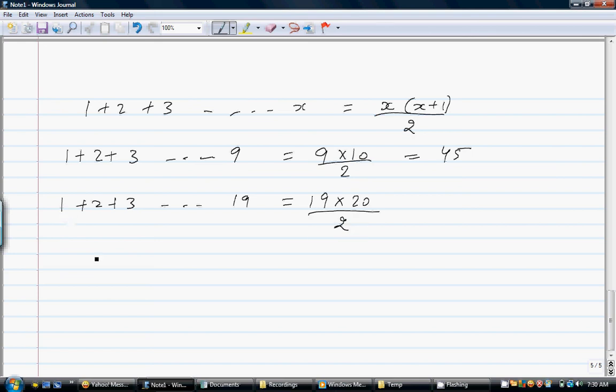Now suppose the number does not start from 1 but starts from something else. For example, 10 plus 11 plus 12 and it goes to 19. So first I have to add numbers from 1 to 19, so that will be 19 into 20 divided by 2, and then I have to subtract numbers from 1 to 9, so that will be 9 into 10 divided by 2.